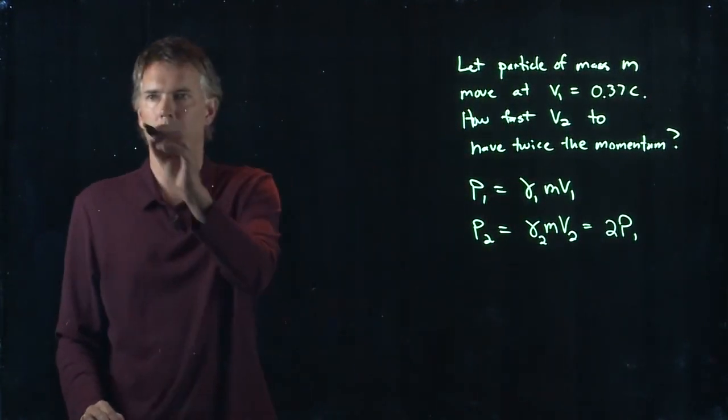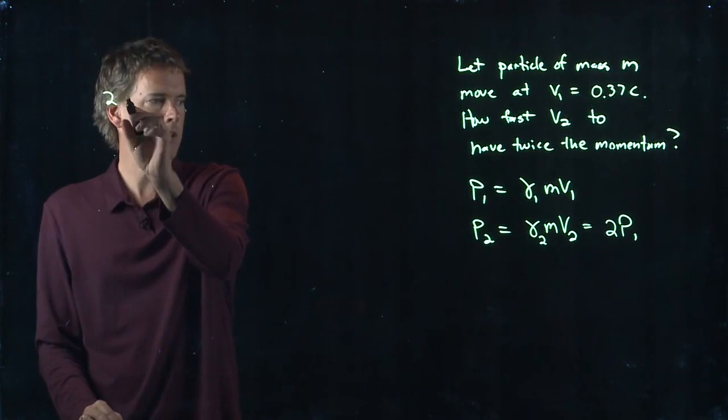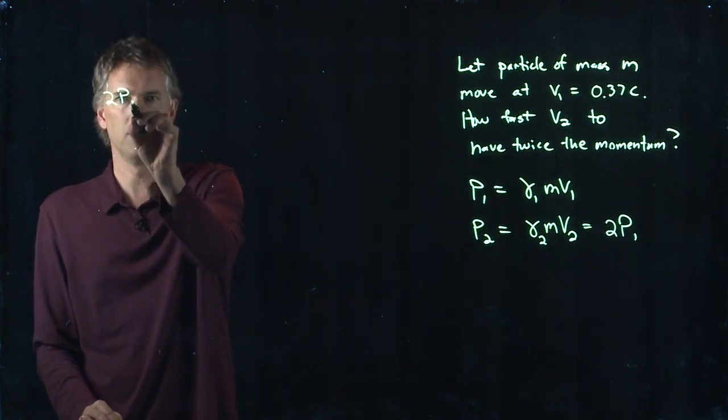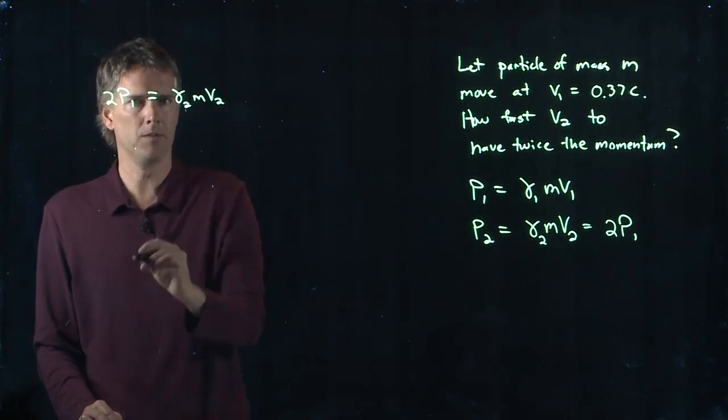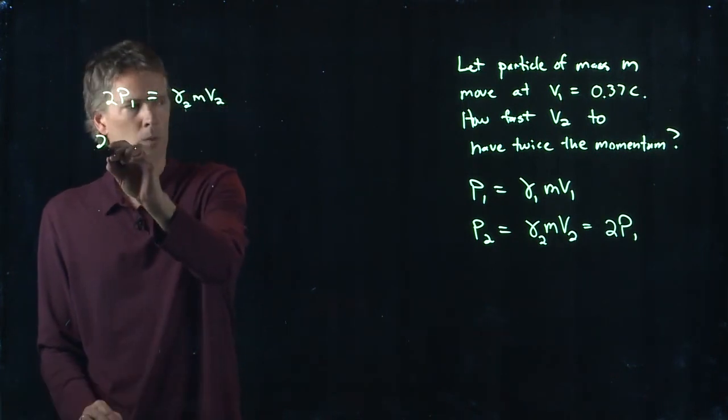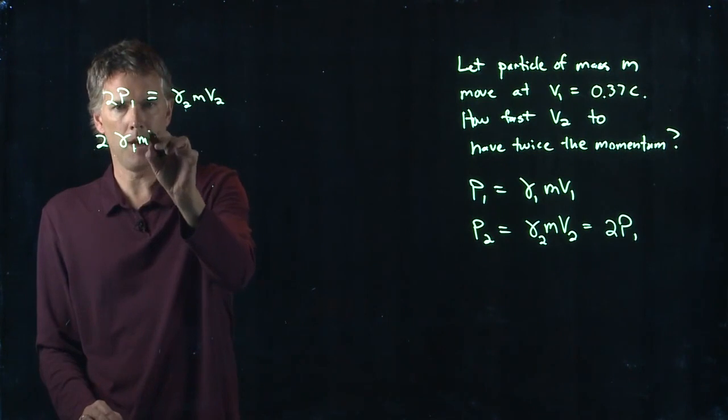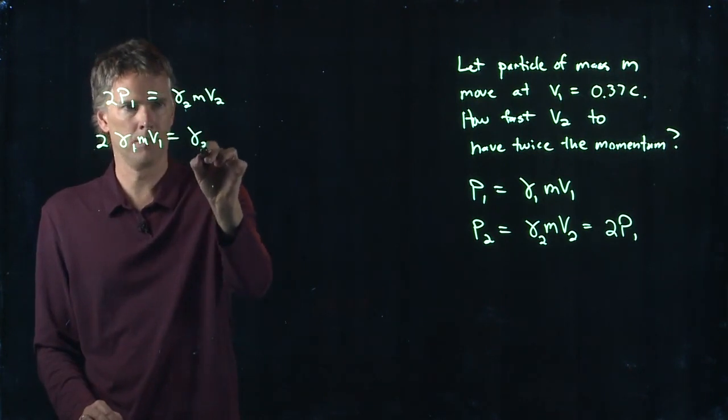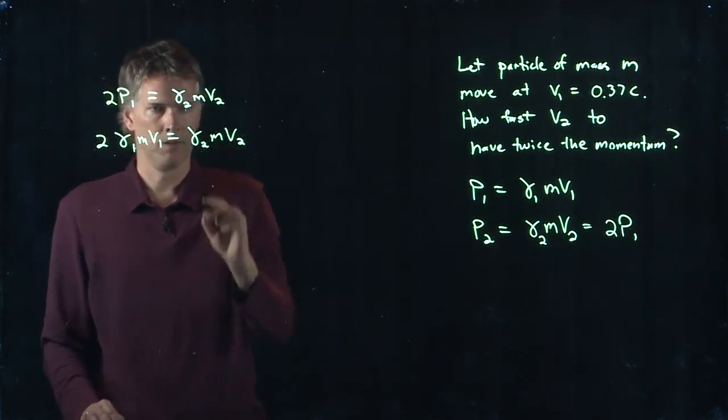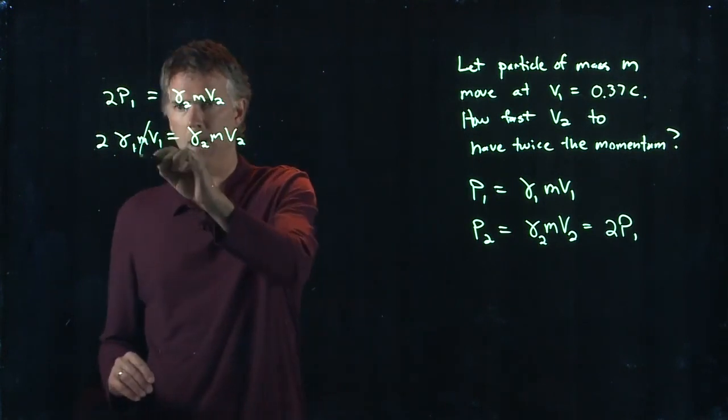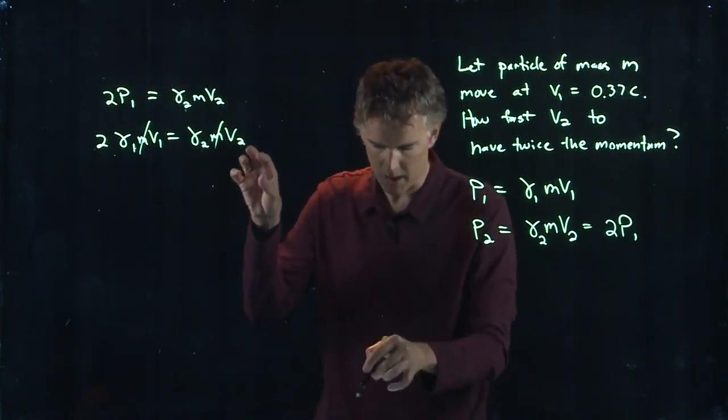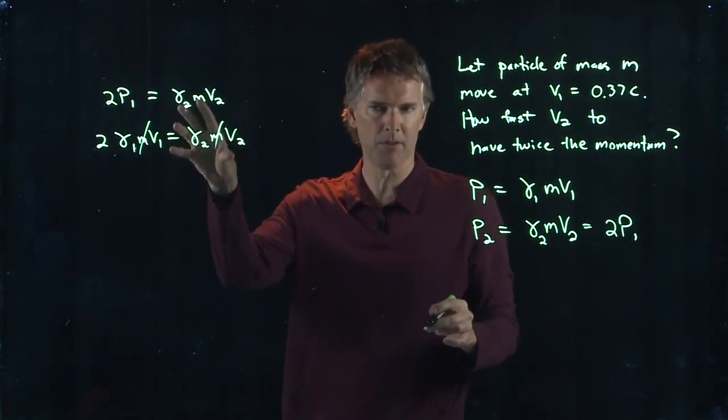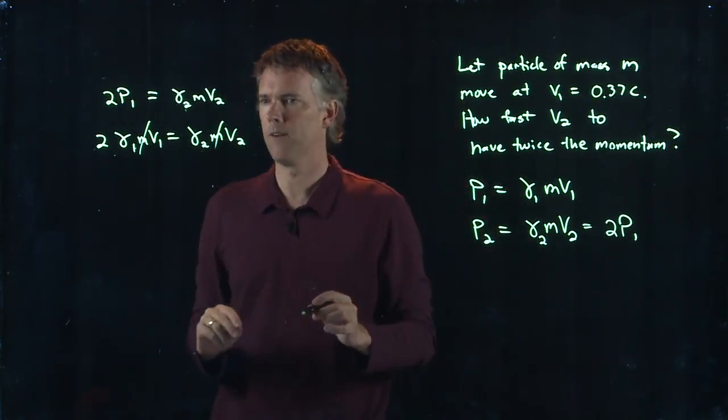All right, so let's write it over here. We've got two times p1 is equal to gamma 2 m v2. And we know what p1 is. It's gamma 1 m v1. Right off the bat, we can get rid of m. m is the rest mass. They were calling it m0. It's the same thing. m is the rest mass. Those cancel out.